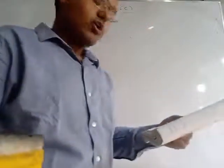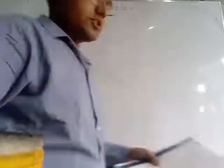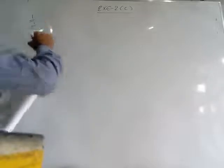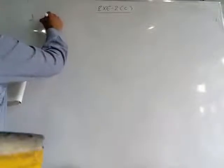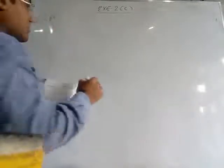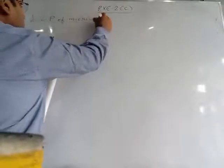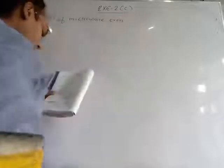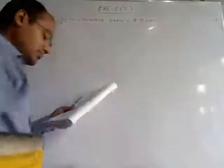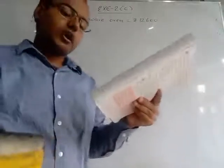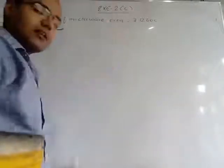The first question: the cost price of a microwave oven is 12,600 rupees. We will write cost price — CP for short. The CP of the microwave oven is 12,600 rupees. Rajesh paid two-thirds of the price in cash, so total cost of the microwave is 12,600 rupees.